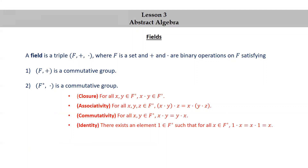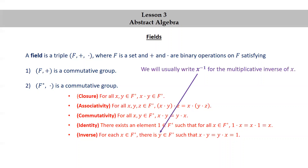Identity: there exists an element 1 in F* such that for all x in F*, 1 × x = x × 1 = x. And inverse: for each x in F*, there is y in F* such that x × y = y × x = 1. We will usually write x⁻¹ for the multiplicative inverse of x, so x × x⁻¹ = x⁻¹ × x = 1.